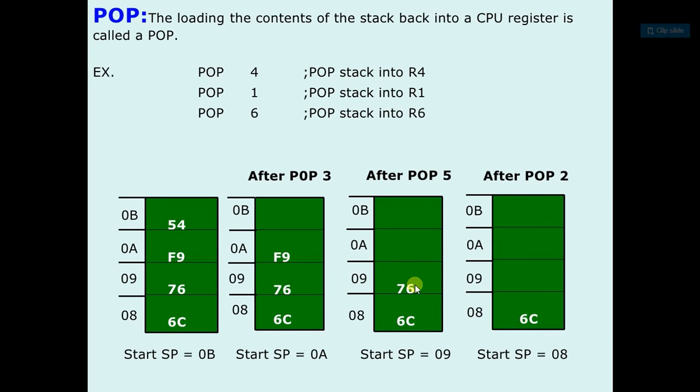So now after the POP 2 instruction, it will copy the data to some destination address. And then it gives the default stack pointer 07. So this is the PUSH and POP instruction used for stack pointer.